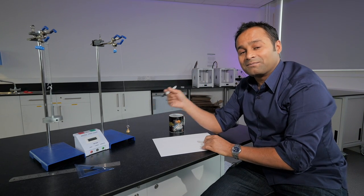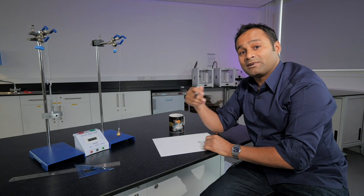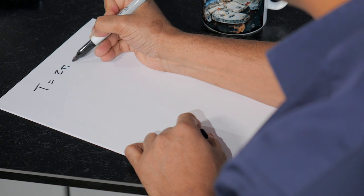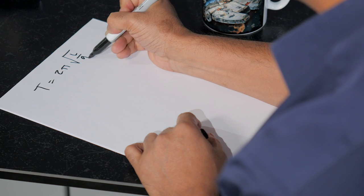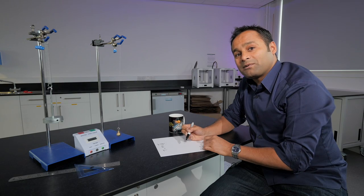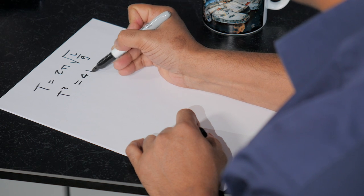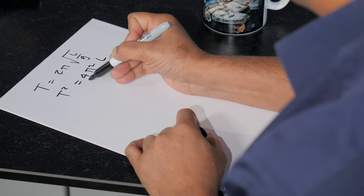Let's consider the pendulum. The period of the pendulum is related to its length by the formula T equals two pi root l over g. So if we square both sides of the equation, we get T squared equals four pi squared l over g.